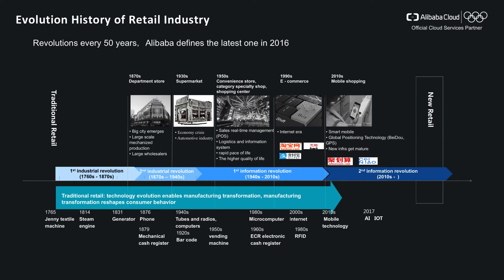From the 1940s, when the automobile was mainstream in US culture, people could go farther and carry more. At the same time, in-home refrigeration allowed shoppers to stock more. Retail moved from local corner stores to general merchants and department stores.